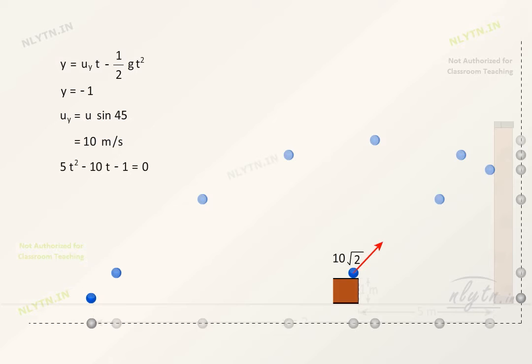Therefore we get 5t² - 10t - 1 = 0. From this, t = (10 ± √(100 + 20))/10. Discarding the negative value, we get t = 2.1 seconds.